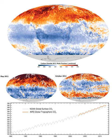Photosynthetic organisms also convert around 100 to 115,000 million metric tons of carbon into biomass per year. Photosynthetic organisms are phototrophs, which means they are able to synthesize food directly from CO2 and water using energy from light. However, not all organisms that use light as a source of energy carry out photosynthesis, since photoheterotrophs use organic compounds rather than CO2 as a source of carbon.